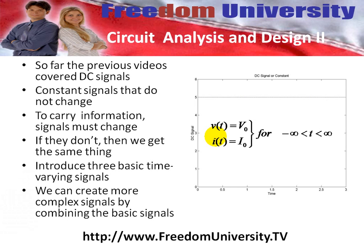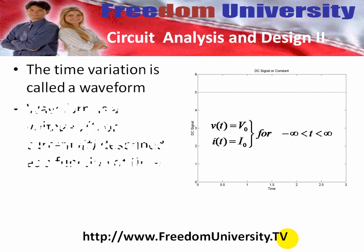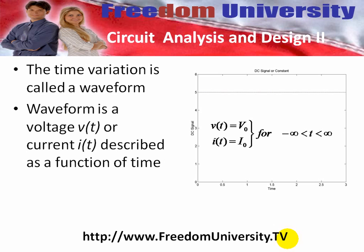As a way of introduction, we normally think of a signal as an electric current, I of T, or a voltage, V of T. The time variation of a signal is called a waveform. More formally, a waveform is basically, in our case, a voltage V of T, or current I of T, described as a function of time.